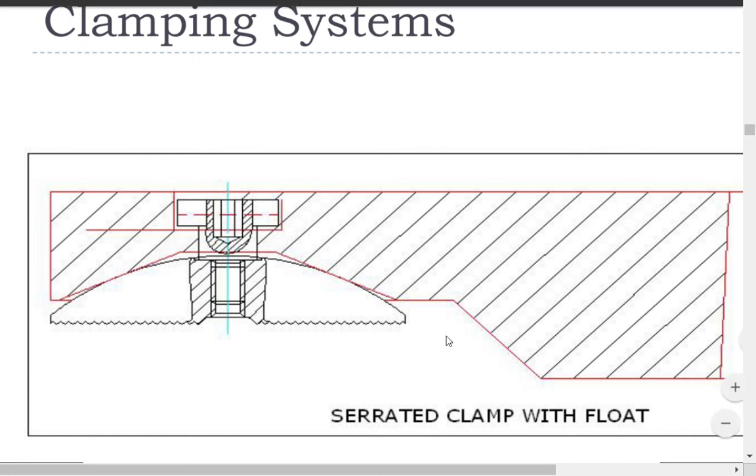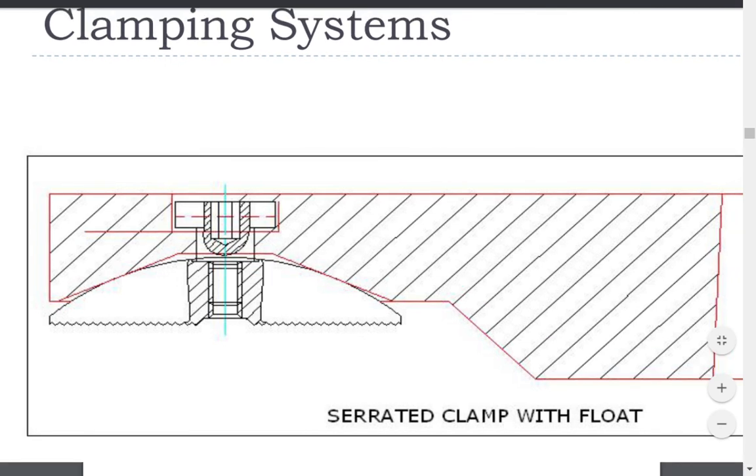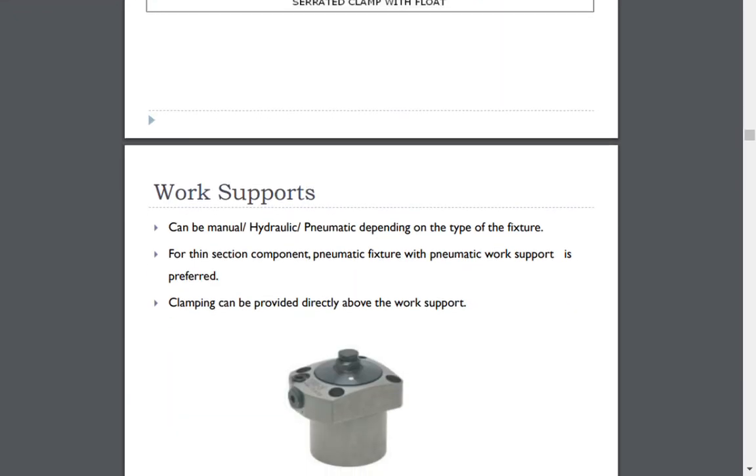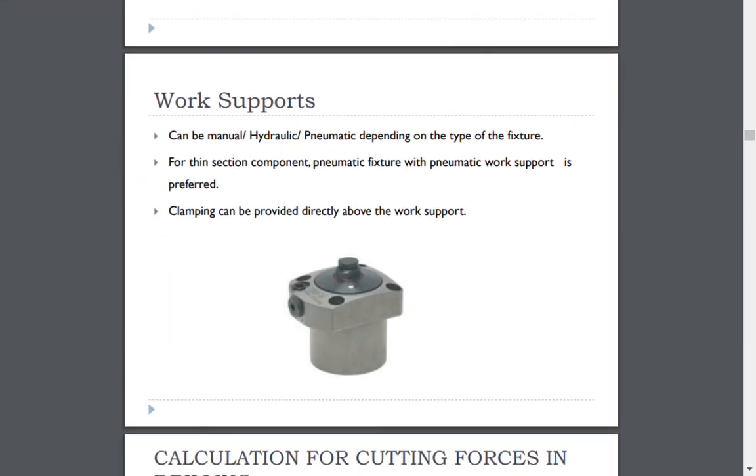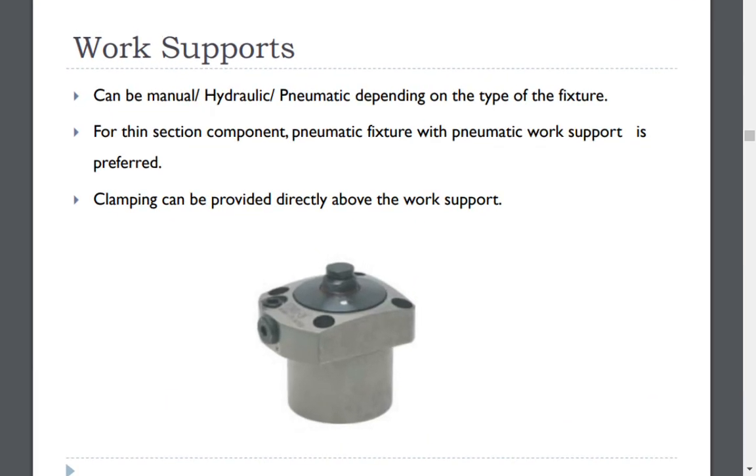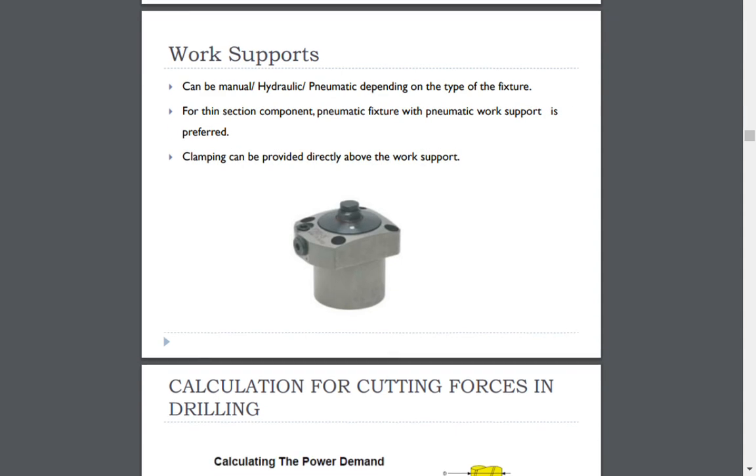The final element is work supports. It can be manual, hydraulic, or pneumatic depending on the type of the fixture. For thin section component, pneumatic fixture with pneumatic work support is preferred. Clamping can be provided directly above the work support.